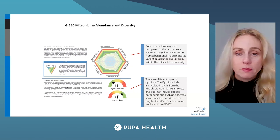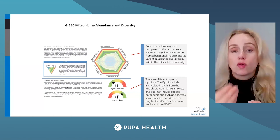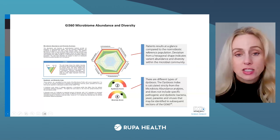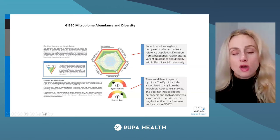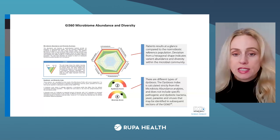For this patient as an example, the actinobacteria phyla is pulled in towards the center, showing lower abundance of that phyla. Where the point of that hexagon plots along that phyla line is the value. So actinobacteria is a little bit lower, Verrucomicrobia is within range, Tenericutes is within range, and Proteobacteria is within range.